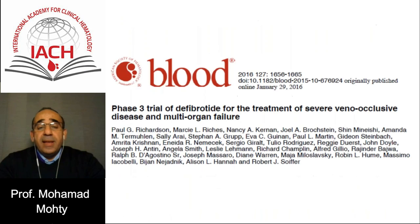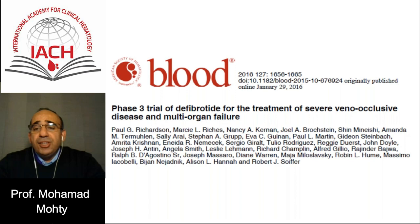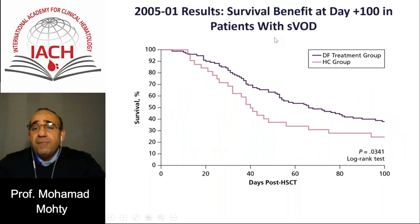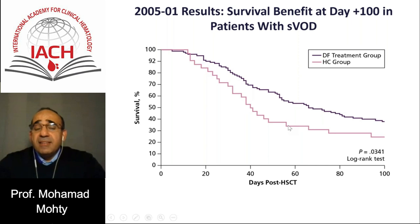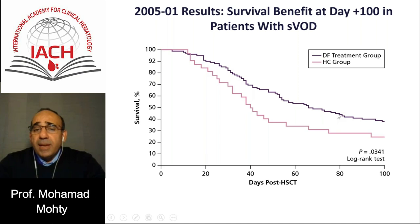We do have nice evidence showing that defibrotide is going to cut or stop this vicious circle of micro-thrombosis and allow for the restoration of a normal physiological process through a decrease of inflammatory mediators and activation of the fibrinolytic system. The approval of this drug was based on a phase 3 trial published in Blood, where the primary endpoint was patients with severe VOD and multi-organ dysfunction. There is a significant advantage in favor of the treatment group compared to the historical control group. This was not a randomized phase 3 trial, but rather used a matched historical control group, because in a life-threatening complication with a high risk of death, it is very difficult to perform a randomized trial against placebo.